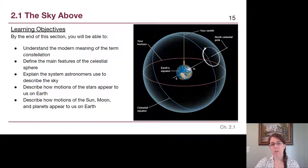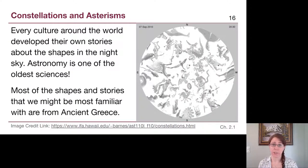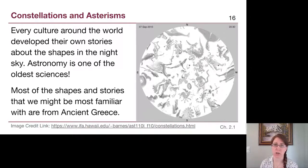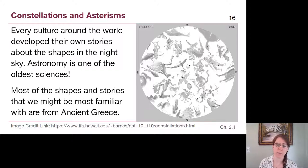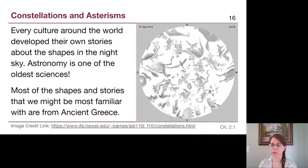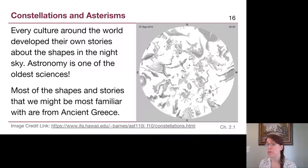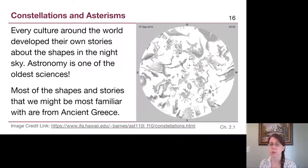Let's start by thinking about the term constellation. Every single culture around the entire globe had their own stories about the night sky and their own patterns that they saw in the stars. Although most of the shapes and stories we may be familiar with come from ancient Greece, those are not the oldest constellations known to history. The ancient Egyptians actually have the oldest recorded constellations, and they used them to help measure the passage of time.